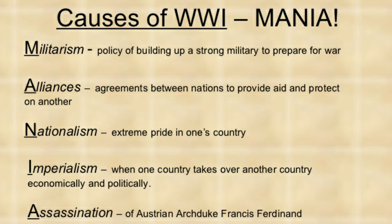The next important cause of the First World War was imperialism. You will come across this terminology several times when you study the chapter in detail. Imperialism is a policy when one country takes over another country economically and politically. The British — the United Kingdom, Great Britain — had adopted the policy of imperialism and started spreading their empire throughout the world. India too was a victim of imperialism.